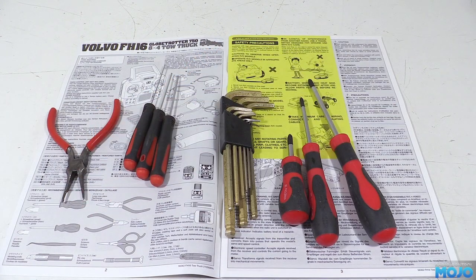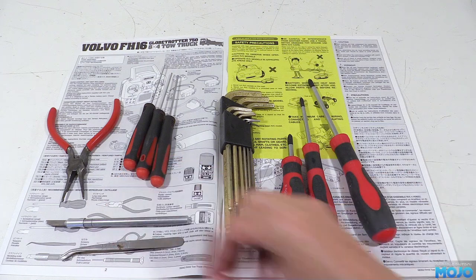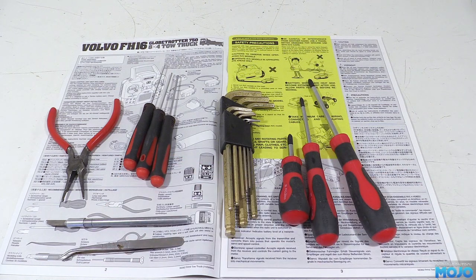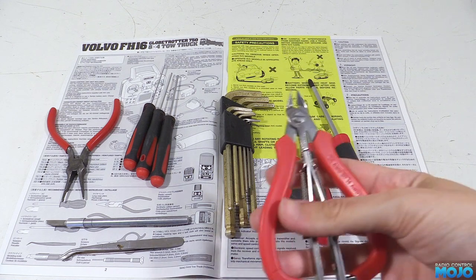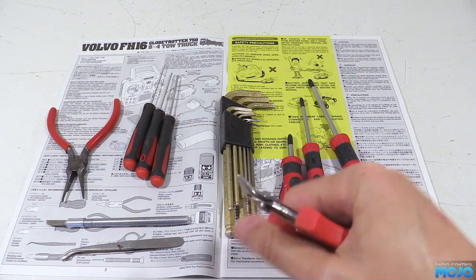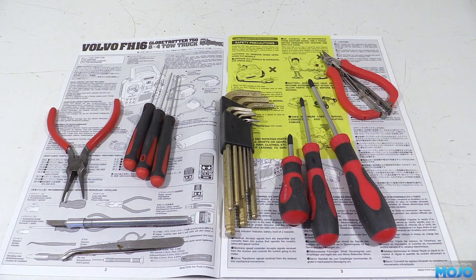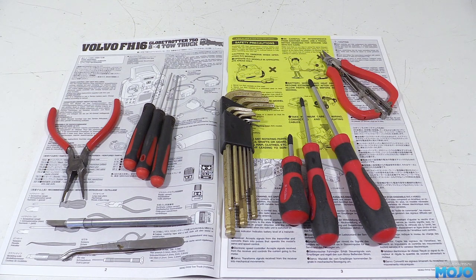Then we have some pliers, a small knife and tweezers. Now even before you get to the body, all of these will come in useful throughout the build. We'll also need some flush side cutters. Now these ones have a built-in wire stripper, but I'm only using them as my regular pair seem to have gone AWOL. We need them so we can cut the plastic parts from the parts tree with a nice clean cut.